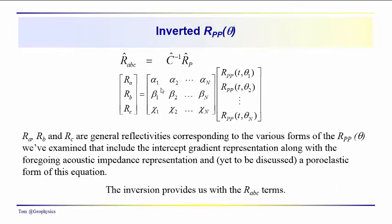And the problem that we have to deal with is how do we determine what these coefficients are. So these would be the general reflectivities. The R, A, B, C terms would be the general reflectivities corresponding to the various forms of Rp of theta that we've been looking at.